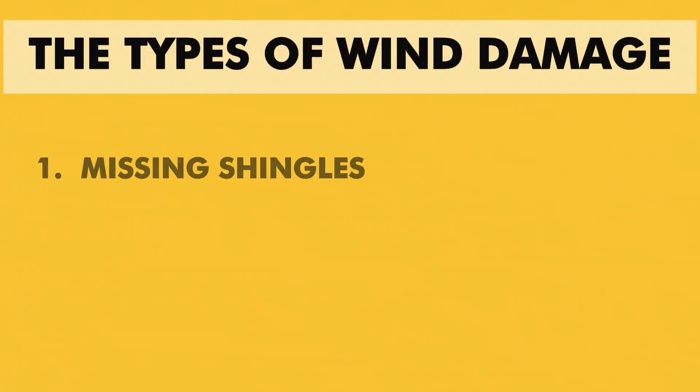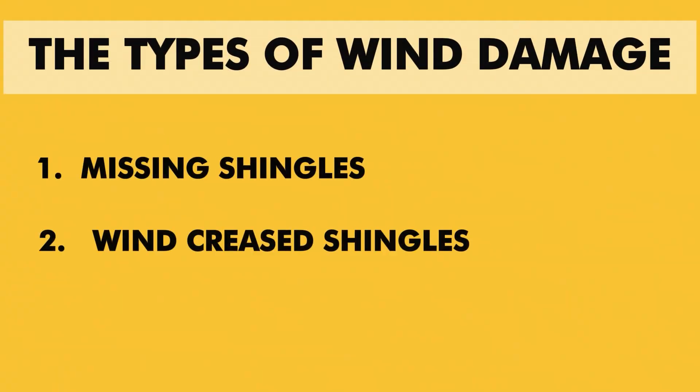To boil it down into two main categories, the types of wind damage are missing shingles and wind crease shingles.